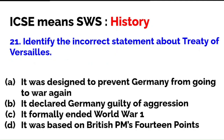Identify the incorrect statement about the Treaty of Versailles. 'It was designed to prevent Germany from going to war again' — correct. 'It declared Germany guilty of aggression' — correct. 'It formally ended World War One' — correct. 'It was based on the British PM's 14 points' — incorrect. The 14 points were not the British PM's; they were proposed by American President Woodrow Wilson, and his 14 points formed the basis of the Treaty of Versailles.